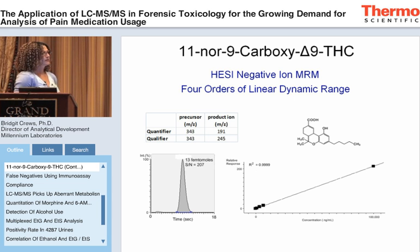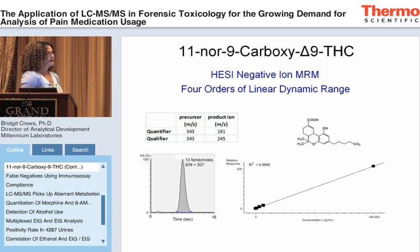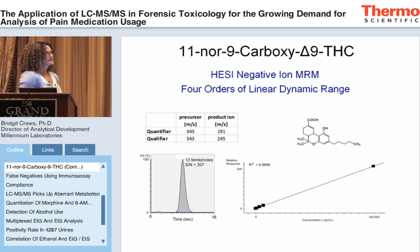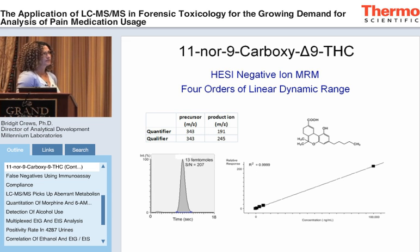Here's an example of the sensitivity we're getting — an MRM chromatogram at 15 femtomoles for Carboxy-THC, which corresponds to 15 nanograms per milliliter at the lowest level. We're having absolutely no problems with sensitivity here and could go much much lower if needed.